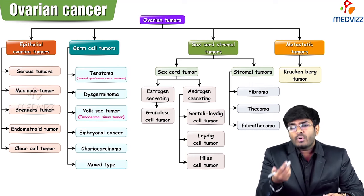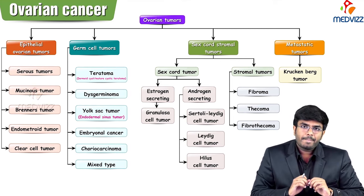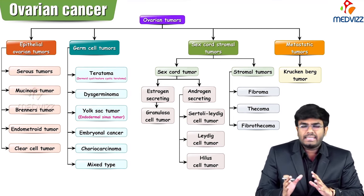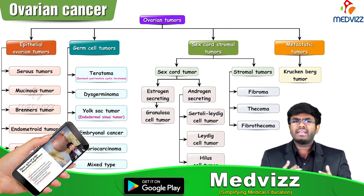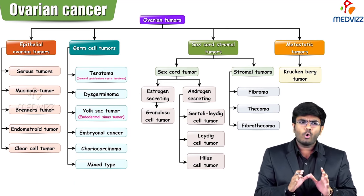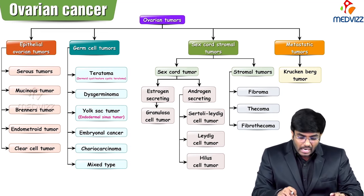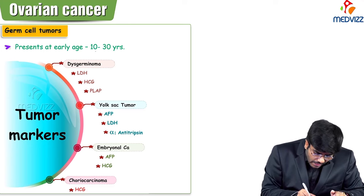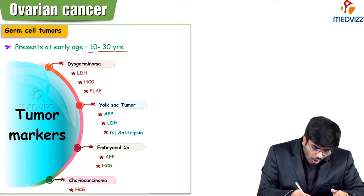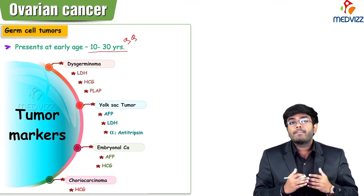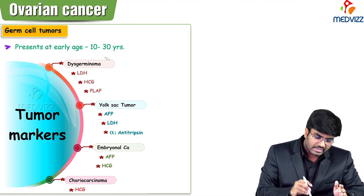Before going further, one important point: usually ovarian cancers are seen somewhere around 60 to 70 years of age — they are very rare and seen in old age groups. But germ cell tumors are going to be seen somewhere around 10 to 30 years of age, so they present very early in onset.